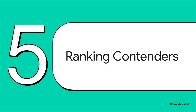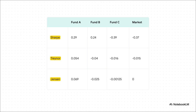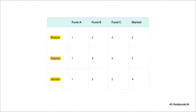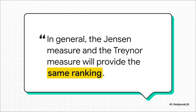Let's pull everything together for the grand finale. We also have results for a couple of other performance measures. Here's the complete scorecard: our Jensen's Alpha results, plus the Sharpe ratio — which looks at return versus all risk — and the Treynor ratio, which is similar to Jensen's and looks at return versus just market risk. When we rank all the funds based on these three different methods, the result is undeniable: Fund A is number one every single time. It doesn't matter how you slice it. A key insight from this: the Jensen and Treynor measures will usually give you the same rankings, because they're both focused on how a fund performs relative to its market risk — its beta.